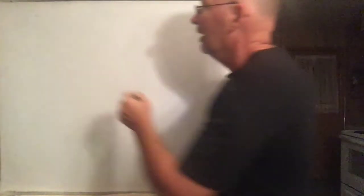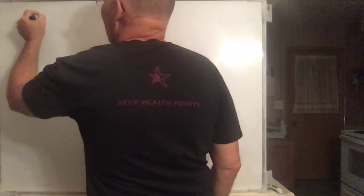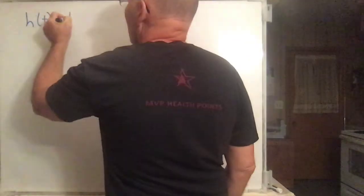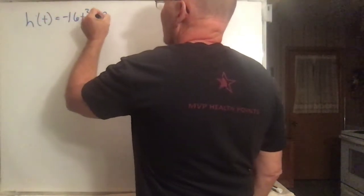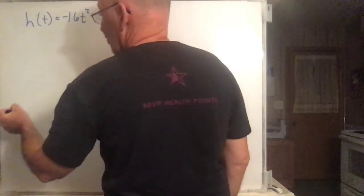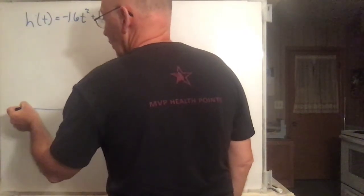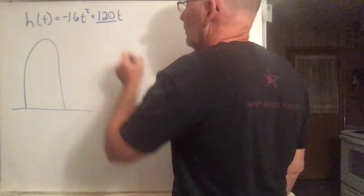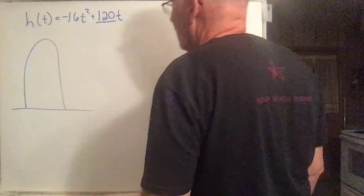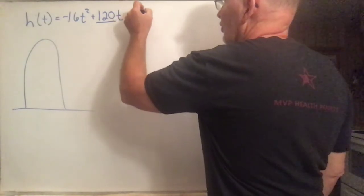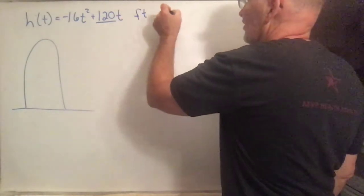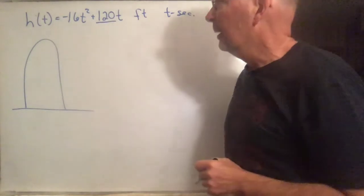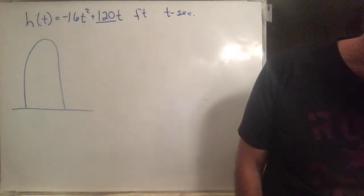What does it say? A ball is thrown into the air from the ground. The height is given by negative 16t-squared plus 120t. So if you toss it up from the ground, it's going to go up. You're tossing it up with initial velocity of 120 feet per second. This is in units of feet, where t is in seconds.